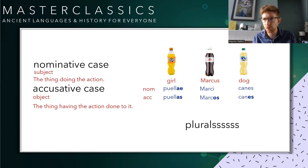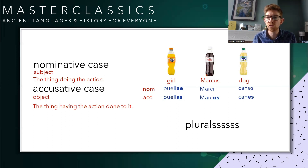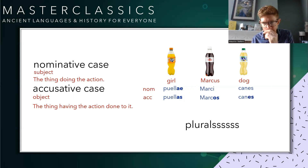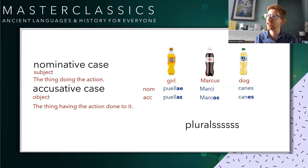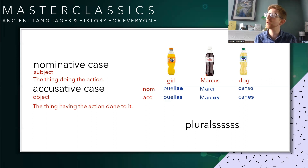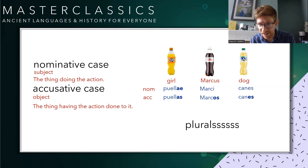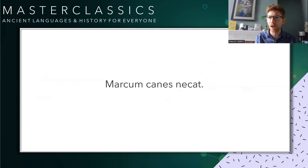Let's think about plurals. More than one girl: puellaí in the nominative and puellás in the accusative. Marcus becomes marci in the nominative and marcos in the accusative. Dog becomes canes in both nominative and accusative plural — which is slightly confusing. What's worth remembering is that in the singular the accusative ends in 'm', and in the plural it's like booing a pantomime villain: 'aas'.